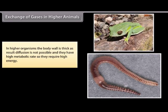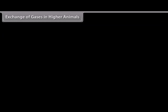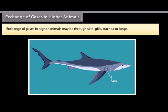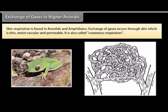In higher organisms, the body wall is thick, so diffusion is not possible, and they have a high metabolic rate requiring high energy. Higher animals have special respiratory organs for exchange of gases and a blood vascular system to transport oxygen and CO2 between the respiratory organ and body cells. Gas exchange in higher animals may be through skin, gills, trachea, or lungs. Skin respiration is found in annelids and amphibians — exchange of gases occurs through skin which is thin, moist, vascular, and permeable. It is also called cutaneous respiration.